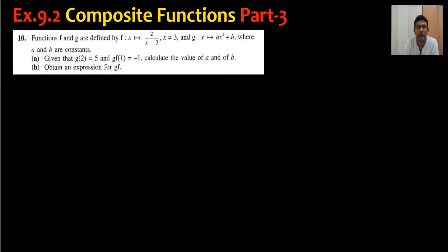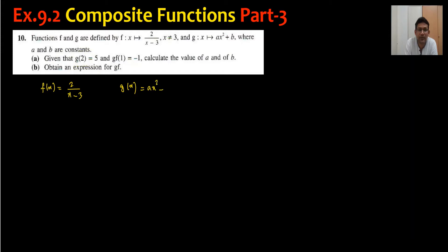Hi everyone, welcome back to my channel. Vertex monogamy exercise 9.2, composite functions. We are doing question number 10 on the board today. In the first equation we have the function f of x equals 2 upon x minus 3, and g of x is given as ax squared plus b.